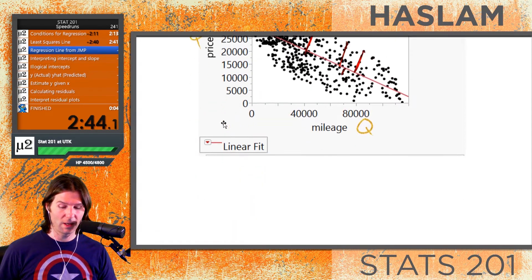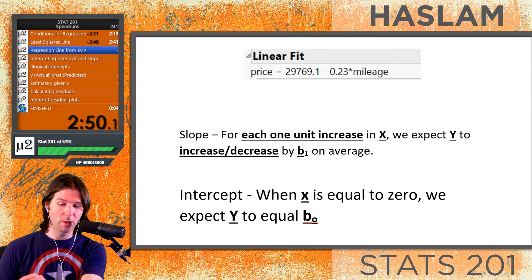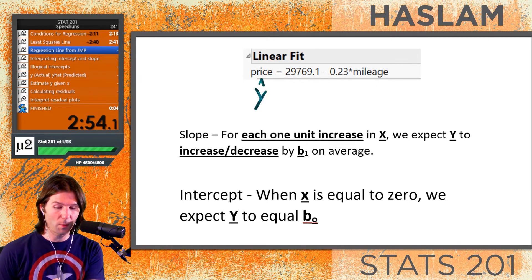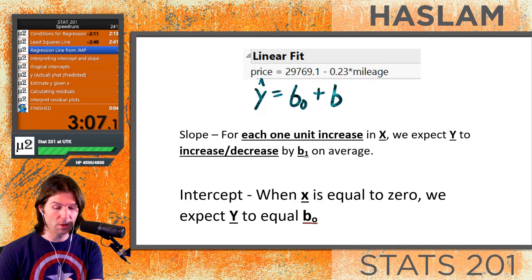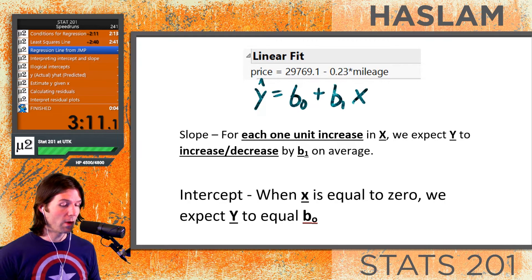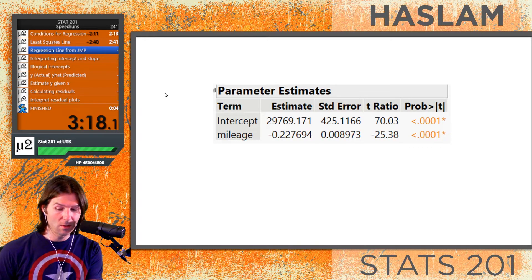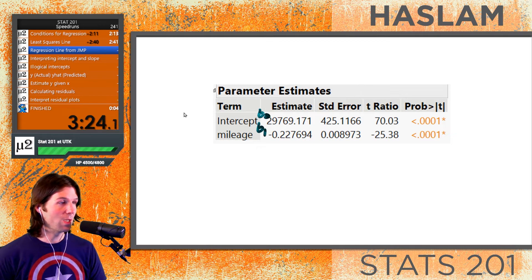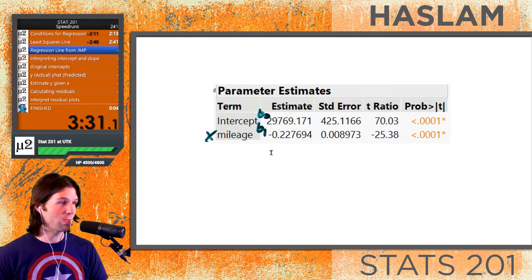Looking at the JMP output: price is the predicted value of the Y variable. The first coefficient shown is the intercept — where X equals zero. Next, we usually write plus, but here there's a minus because the slope is negative, followed by the slope coefficient and the X variable name. These values also appear further down in the output as b-zero for the intercept and b-one for the slope estimate.